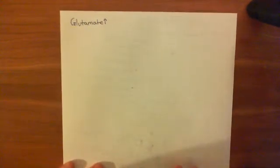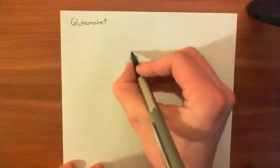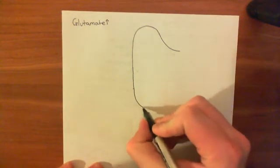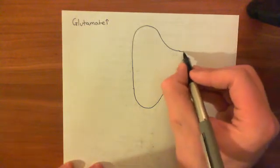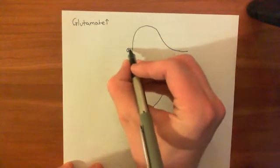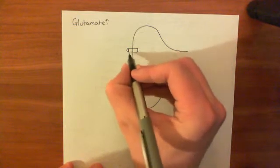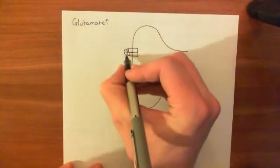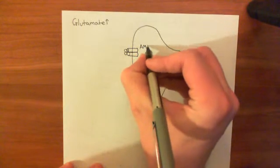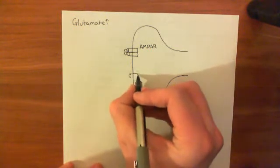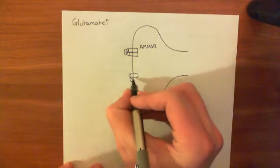Now we need to look at the postsynaptic cell and the receptors for glutamate. Let's say this is a dendritic spine of the postsynaptic cell. Postsynaptic cells generally have two types of glutamate receptors. The first is an AMPA receptor — though in some cases kainate receptors — which consists of four subunits forming the pore. The other type is an NMDA receptor, which also consists of four subunits.